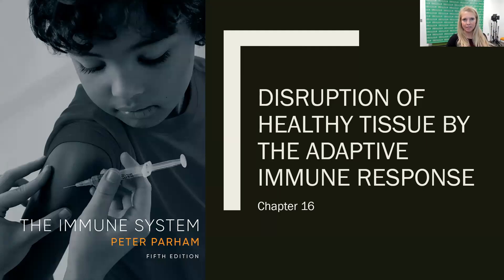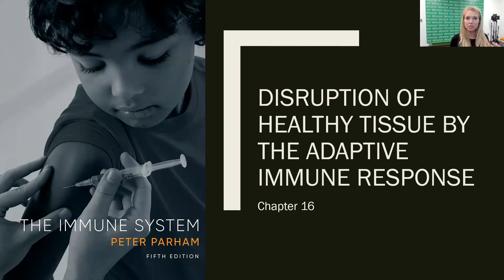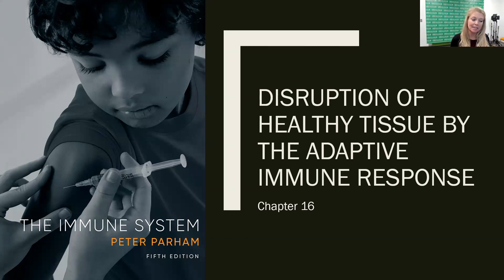The topic covered in chapter 16 is autoimmunity, and we call it disruption of healthy tissue because it is an immune response against self-tissue that normally would be healthy, but for some reason is being attacked by the immune system.